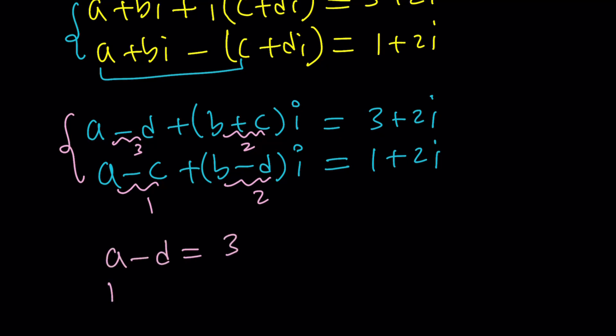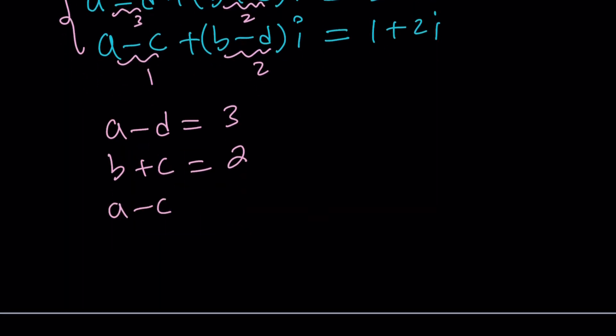a minus d is equal to 3. b plus c is equal to 2. a minus c is equal to 1. And b minus d is equal to 2. Awesome.